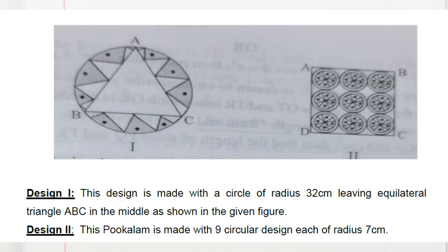These are the two designs given to us. Design 1 is made with a circle of radius 32. If O is the center, then OB is 32; similarly OA and OC. An equilateral triangle ABC is inscribed in the circle. Design 2 is made with nine circular designs — nine circles, each of radius 7 cm. Now we'll come to the question part.